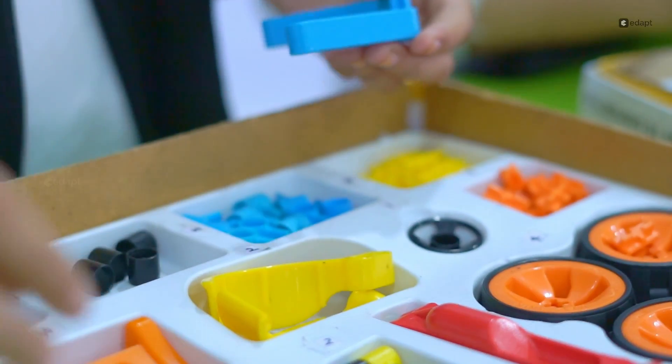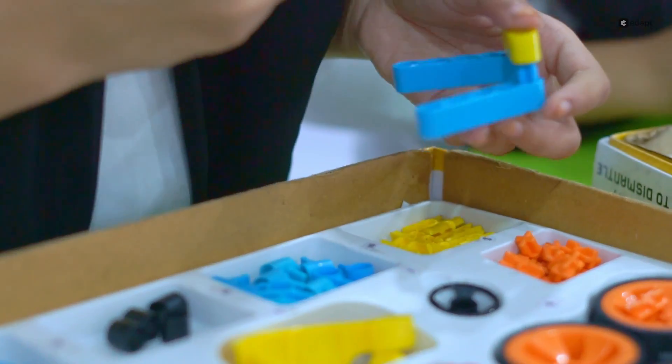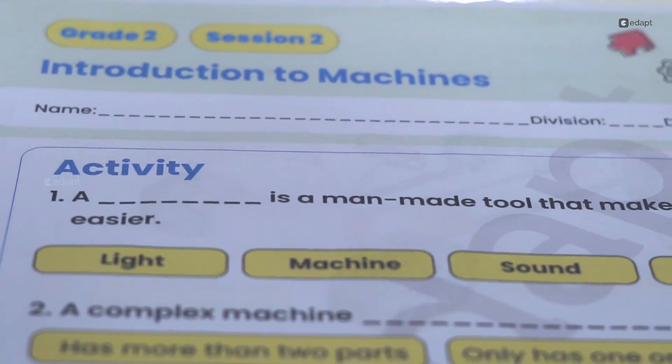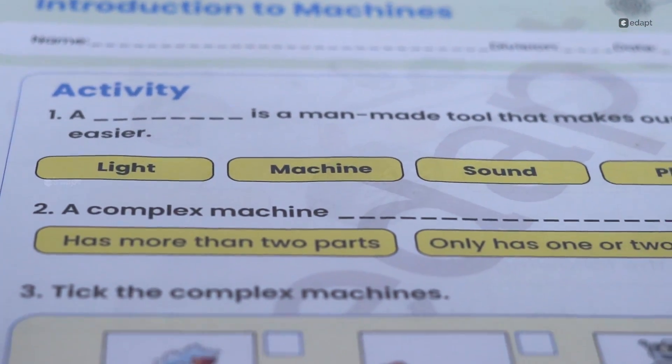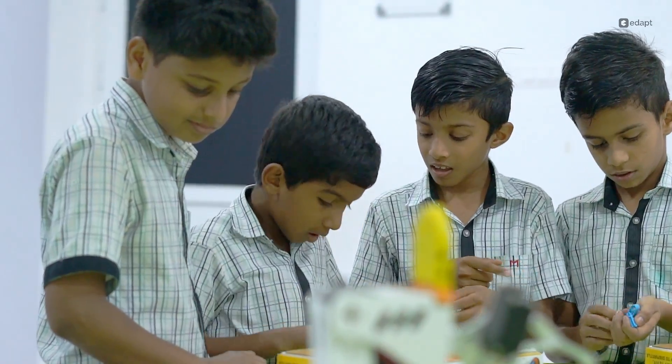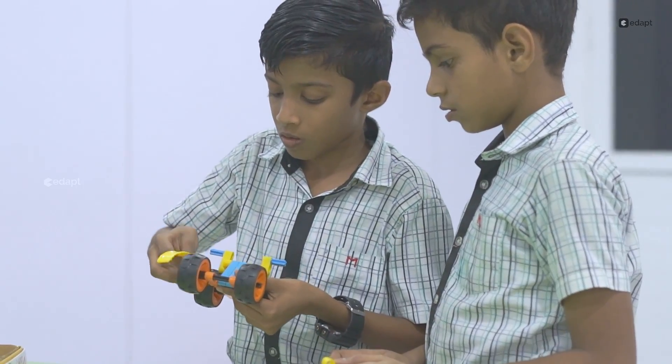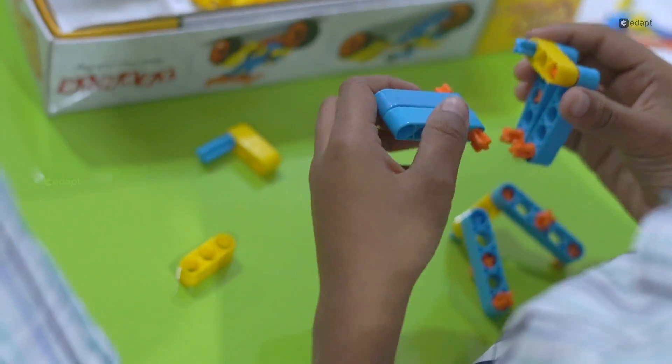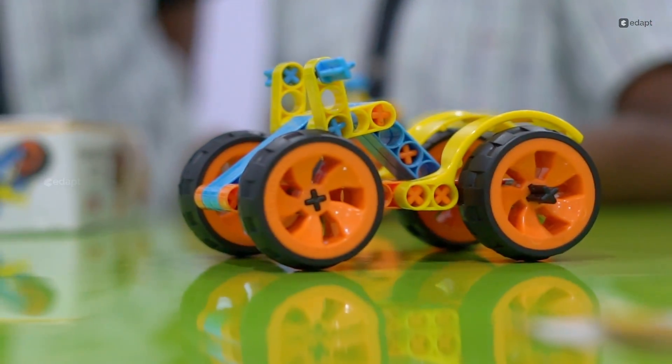For example, this is a simple mechanical kit where students will build various models with the guidance and worksheets provided by our experts. After a thorough explanation of the basics, students will use their problem-solving skills and creativity to assemble the model piece by piece, just like building with Legos.